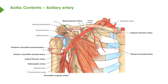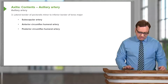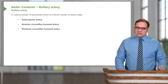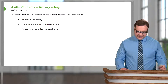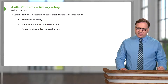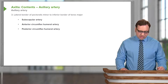The remaining two branches from the third part are the anterior and posterior circumflex humeral arteries. The posterior circumflex passes out through the quadrangular space, accompanied by the axillary nerve. These form anastomoses around the surgical neck of the humerus. So in summary: three parts — one artery from the first part, two from the second, and three from the third.